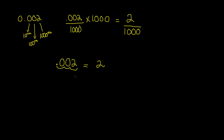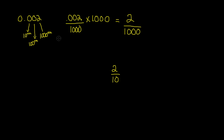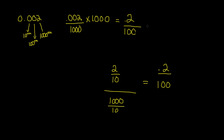Now we need to make sure the denominator is 100. So we divide both the numerator and denominator by 10 — 2 divided by 10 gives us 0.2, and 1000 divided by 10 gives us 100. So our new fraction is 0.2 out of 100, which means our answer is 0.2 percent.